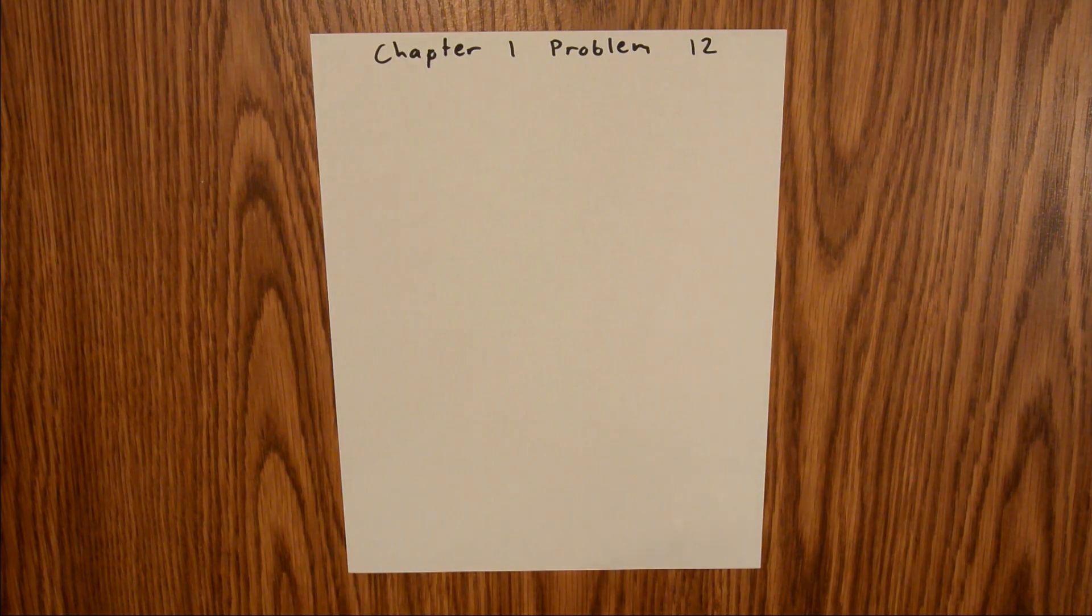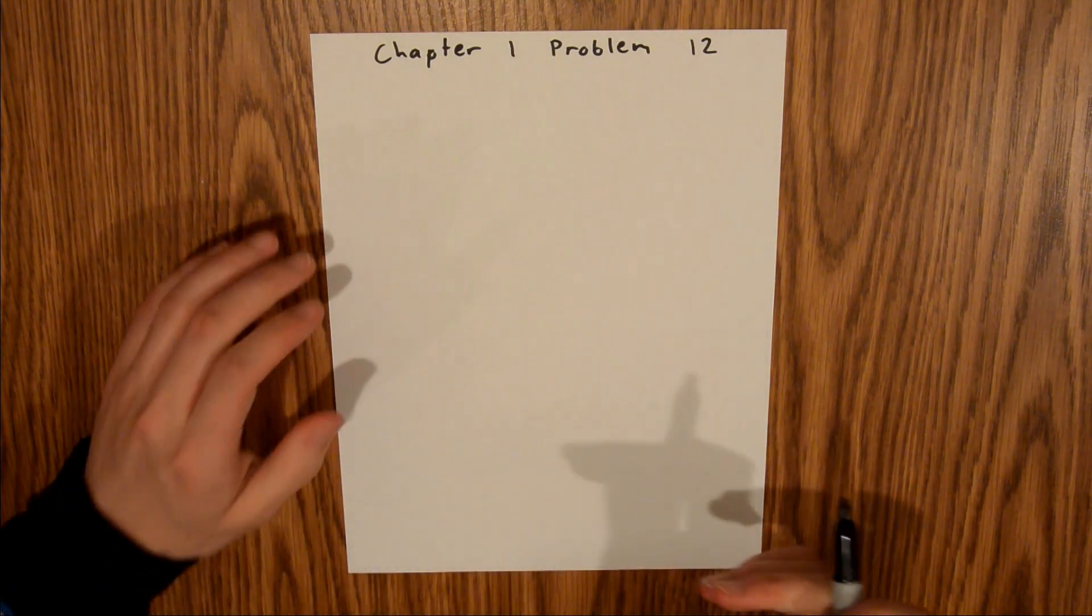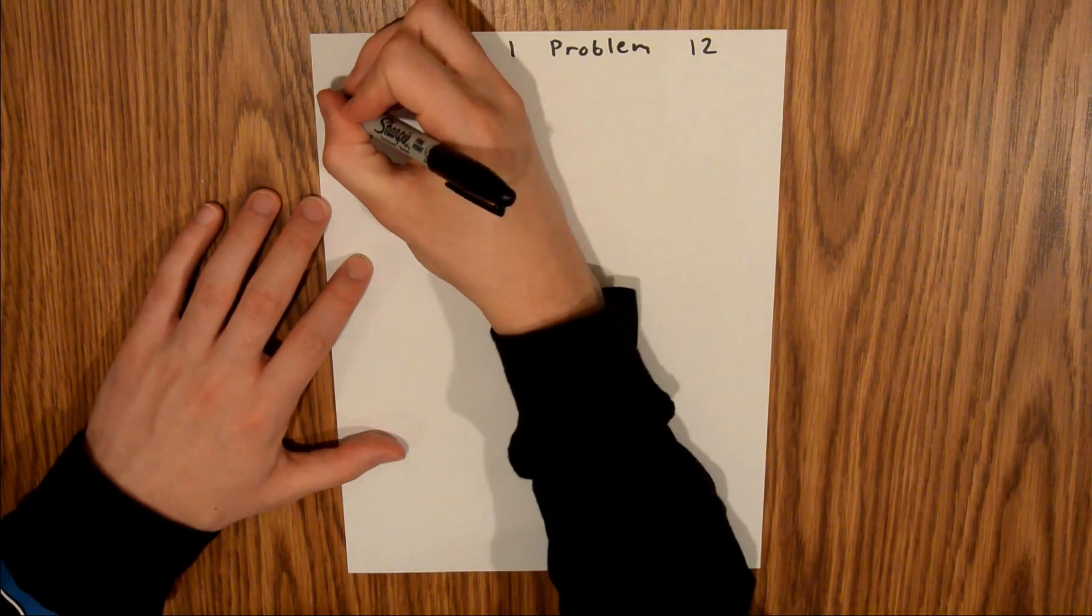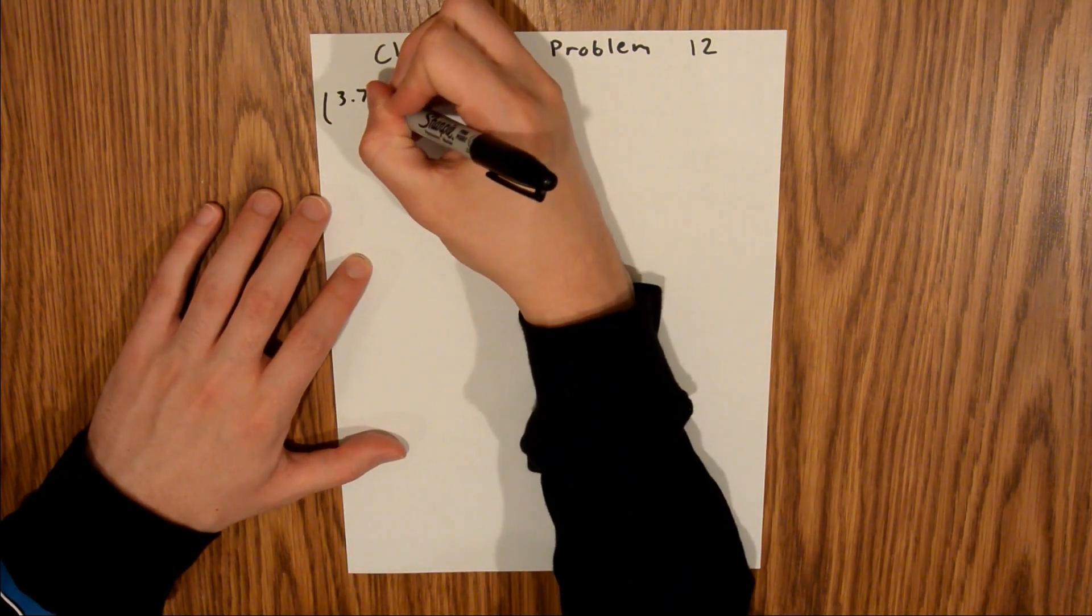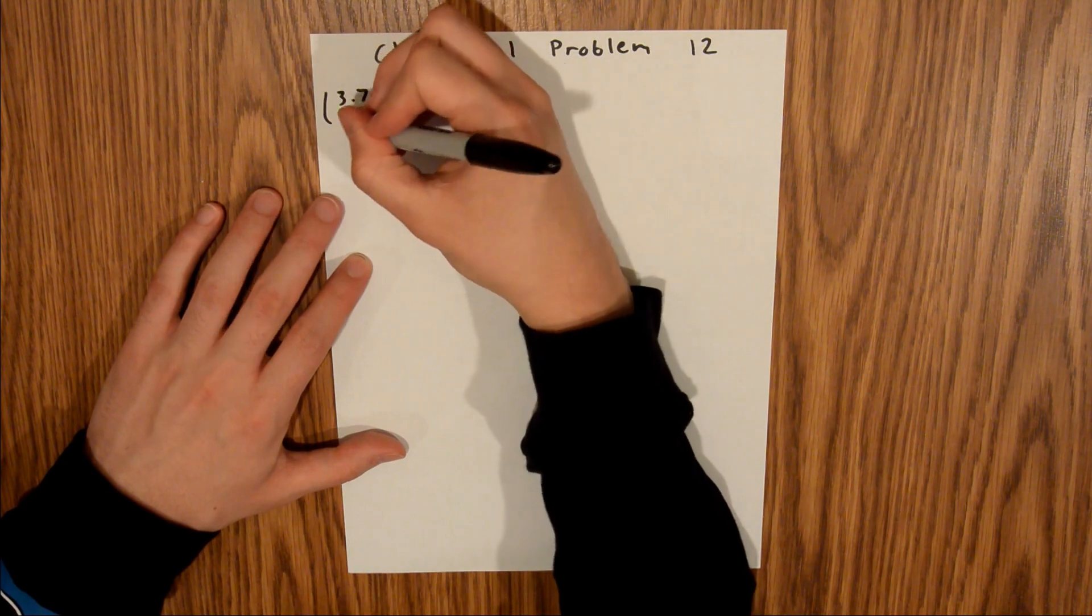Chapter 1 is all about measurement, and in Problem 12, we are talking about a plant that grows 3.7 meters in 14 days, and we're asked to find that growth rate in micrometers per second. And so what we can do is we can start with the rate that we're given, and so that is 3.7 meters in 14 days.